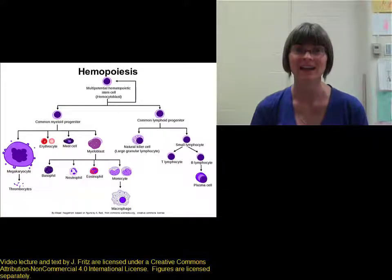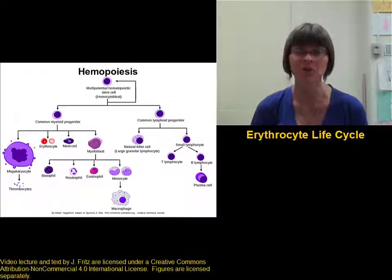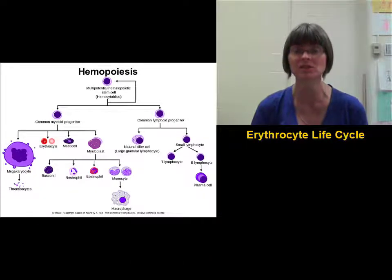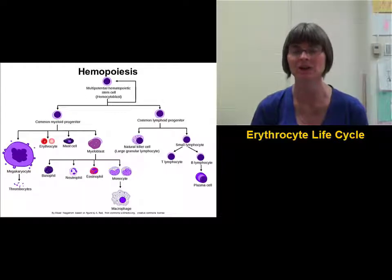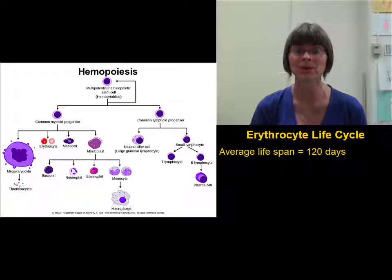Because erythrocytes lack a nucleus, ribosomes, endoplasmic reticulum, mitochondria, and a lot of the other organelles we associate with a cell, they're not very good at repairing themselves, and they have a more limited lifespan. The lifespan of an average erythrocyte is about 120 days, or four months.